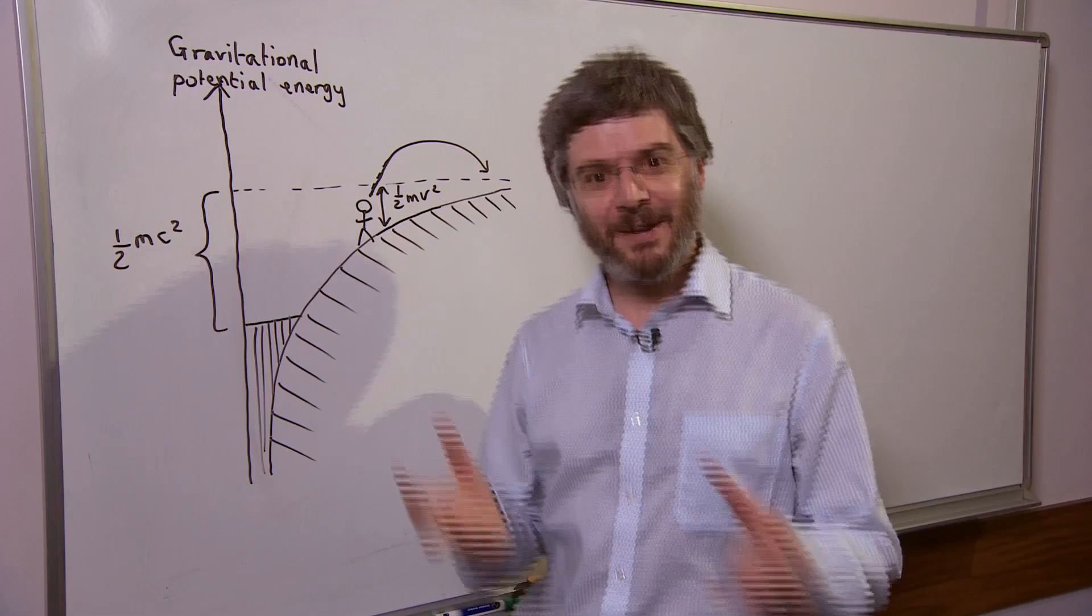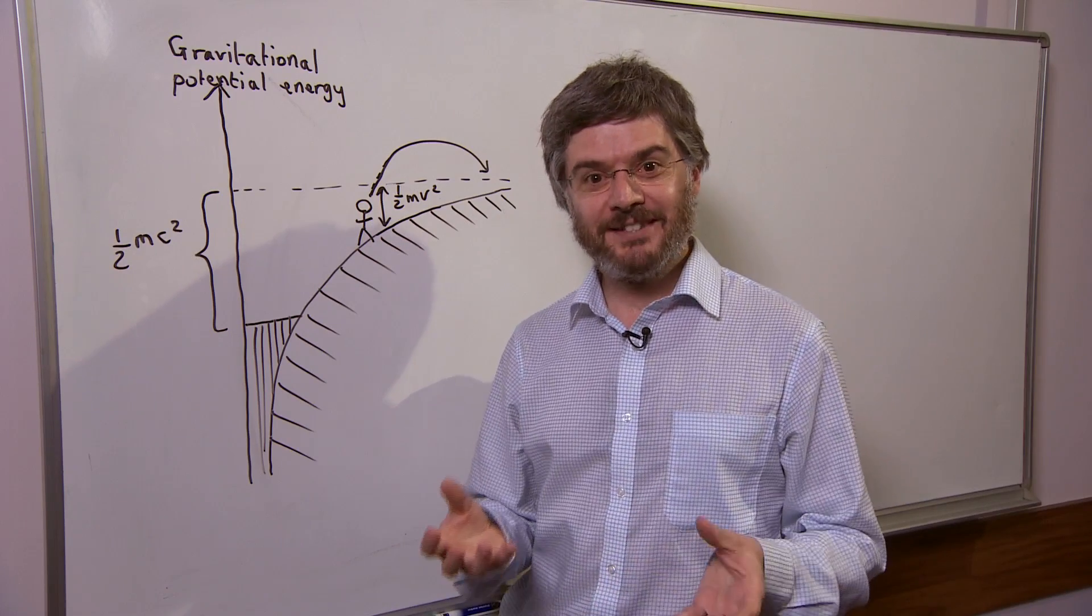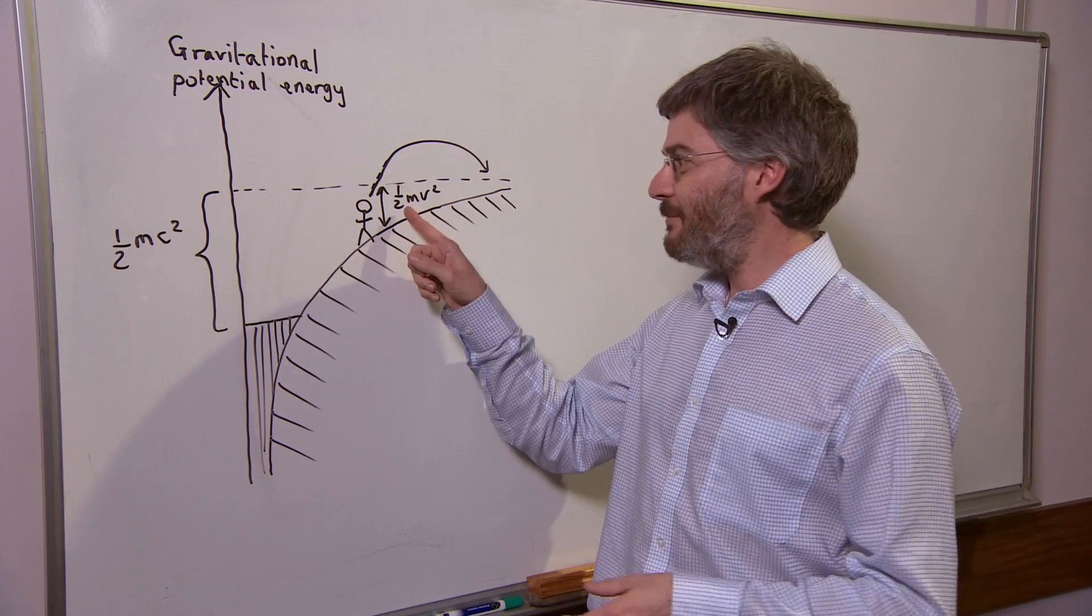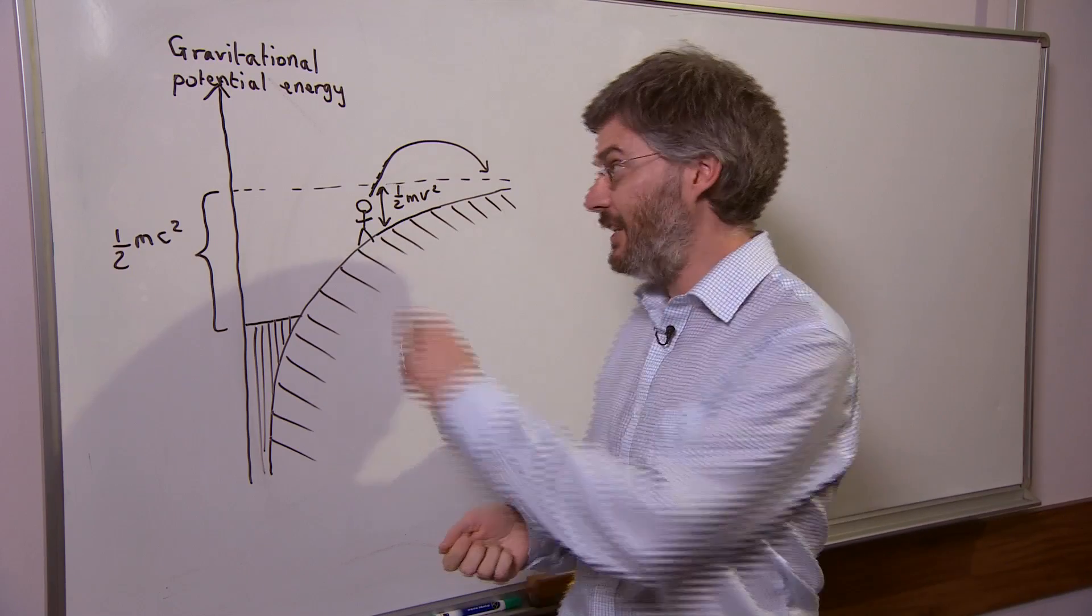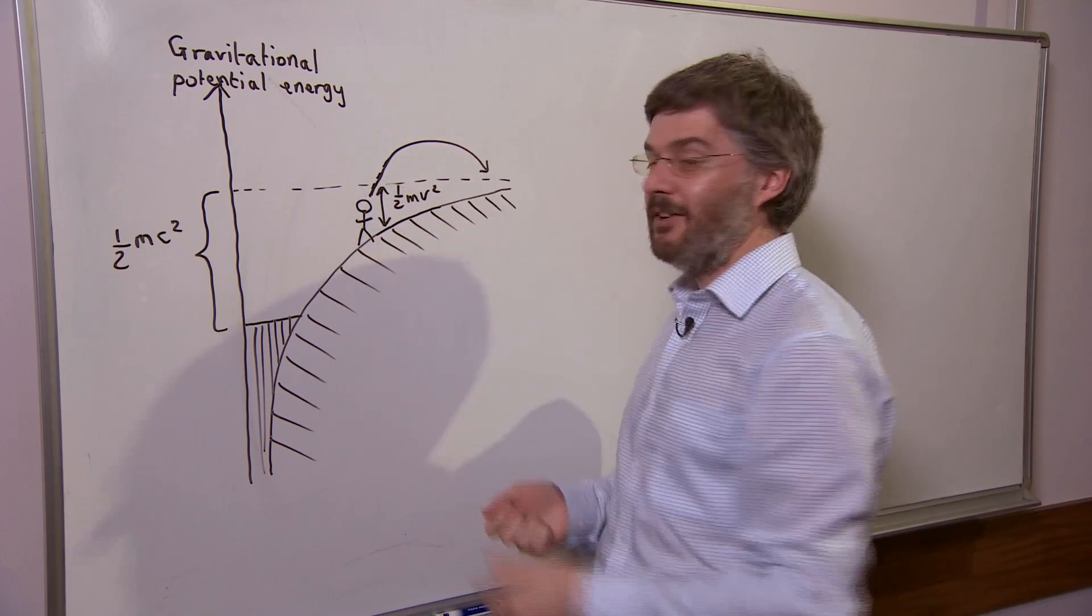Let's say I'm in a hole and I want to jump out of that hole. I need to give myself some kinetic energy, some half mv squared, and that kinetic energy needs to be enough to overcome the gravitational potential energy so I can jump out of the hole and escape.